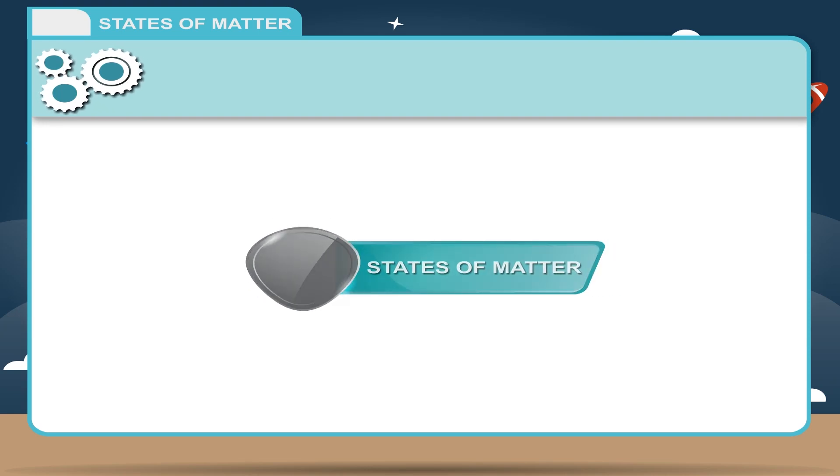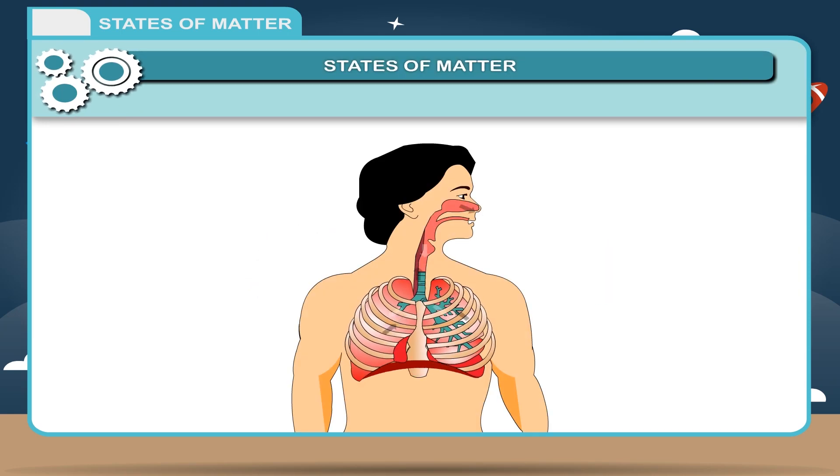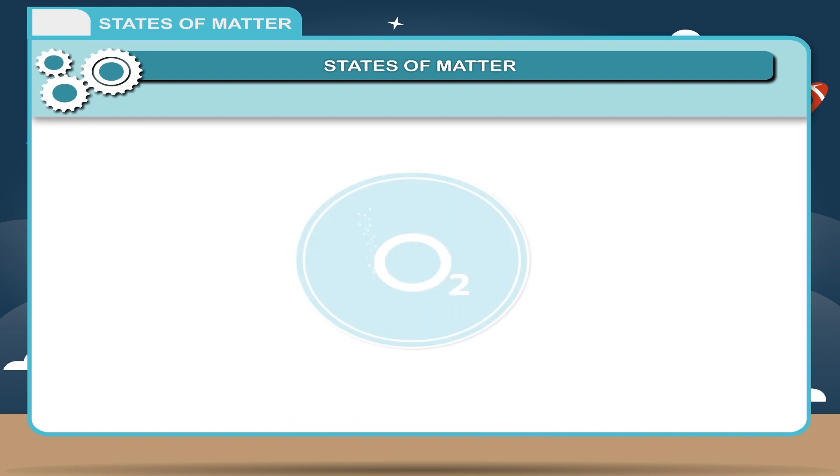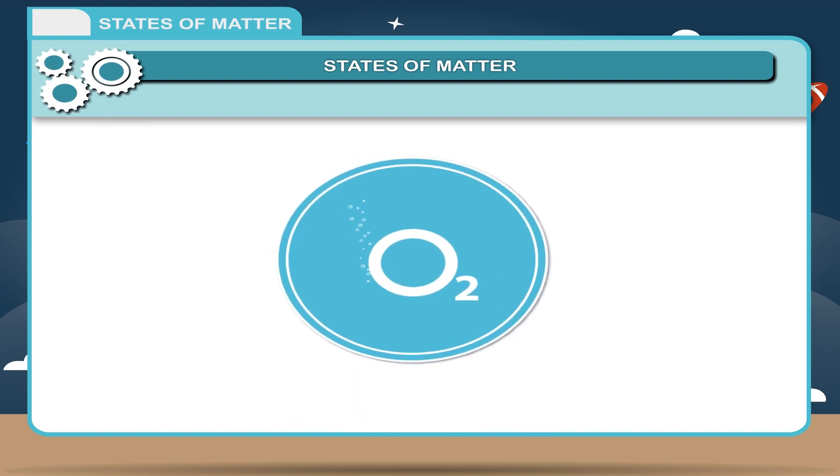States of Matter. To live, each living being breathes in air. Life on this planet has been possible due to the presence of oxygen in air and water on earth.